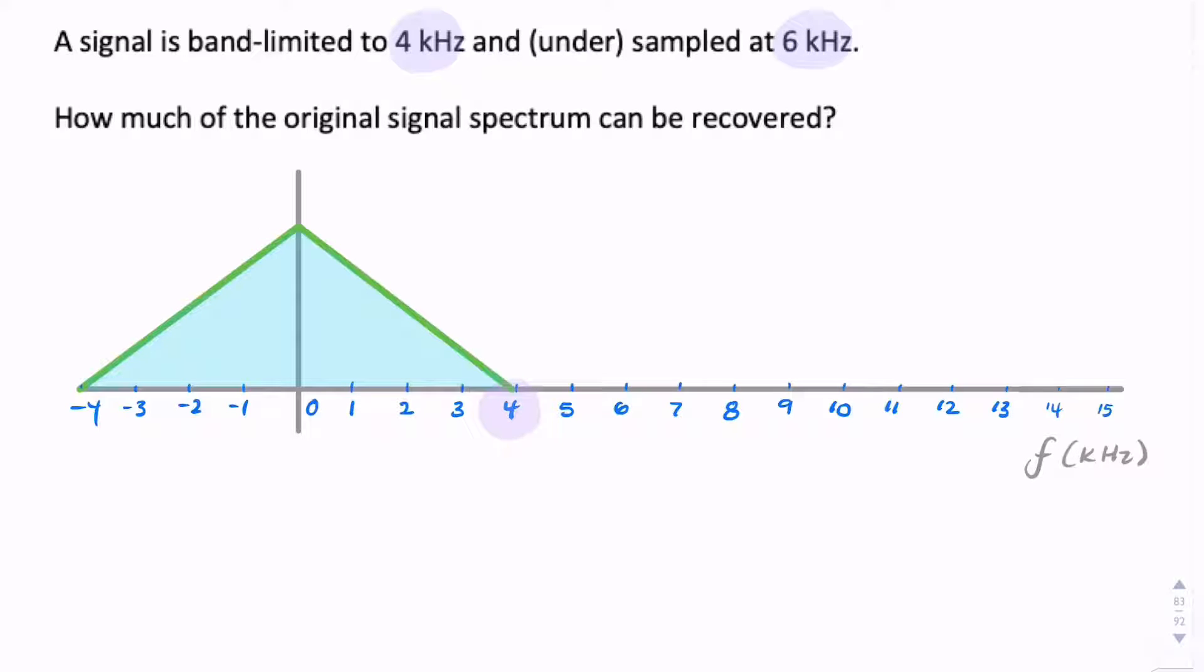And we know that it's sampled at 6 kHz. The question says it's under-sampled, but we know that because we can calculate the Nyquist rate as twice the bandwidth. So that's 2 times 4 kHz, which is 8 kHz. And the sample rate is 6 kHz, which is less than the Nyquist rate. So we know it's under-sampled.